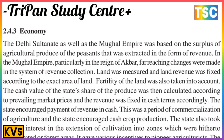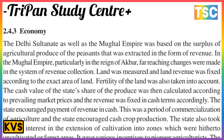In the Mughal Empire, particularly in the reign of Akbar, far-reaching changes were made in the system of revenue collection. The land was measured and land revenue was fixed according to the exact area; the fertility of the land was also taken into account. The cash value of the state's share of the produce was calculated according to prevailing market prices, and revenue was fixed in cash terms. The state encouraged payment of revenue in cash and also encouraged cash crop production.